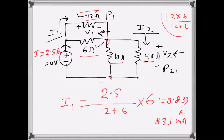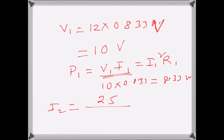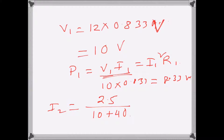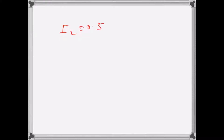Now I need to find I2. The remaining 2.5 amps flows through the next parallel combination of 10 ohms and 40 ohms. Applying the current divider rule again: I2 = 2.5 over (10 + 40) times 10, which is 2.5 over 50 times 10, giving I2 = 0.5 amps.